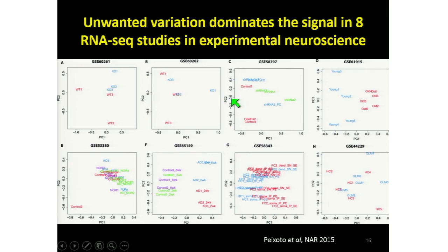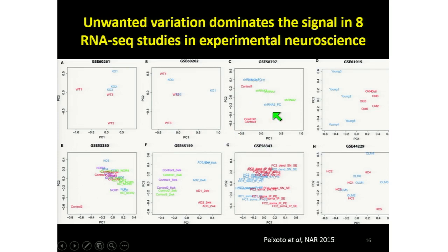The second panel shows the same issue. We've got wild types and knockouts mixed up. In another panel, there are controls, short-hairpin RNA, and short-hairpin RNA with fear conditioning. Fear conditioning means a mouse was put in a spot and given an electric shock — that should make irreversible changes in gene expression in the brain. There are three groups — red, blue, and green — and they're not clustered nicely according to the replicates.